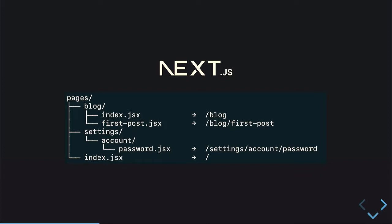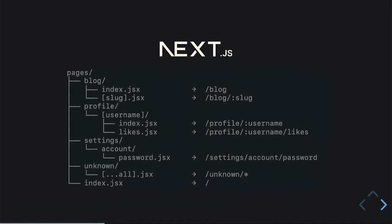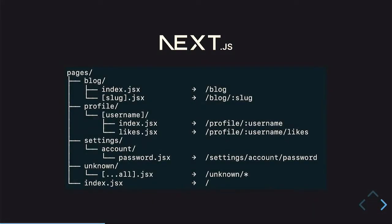It doesn't only apply to index.js files — you can also use any name and it will automatically route those for you. It also works with nested files. For dynamic paths — like path parameters in Django — they use this syntax with brackets to denote a dynamic path. For example, blog/[slug].jsx means that slug can be anything. And with the spread syntax, it will capture everything beyond that point, including slashes.